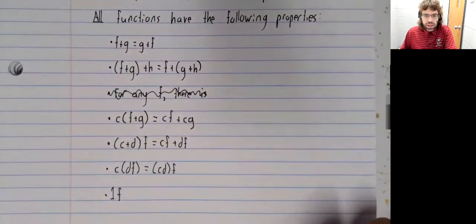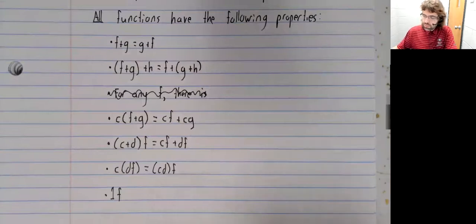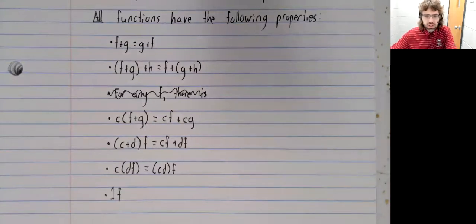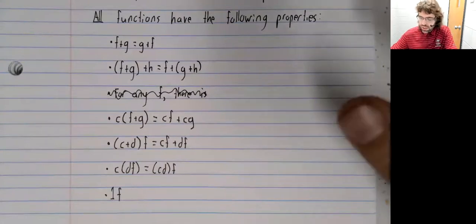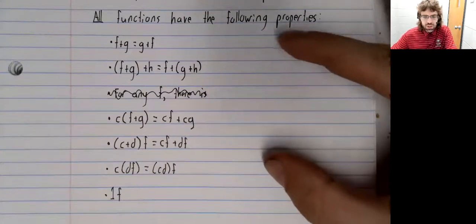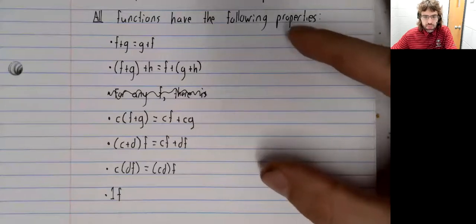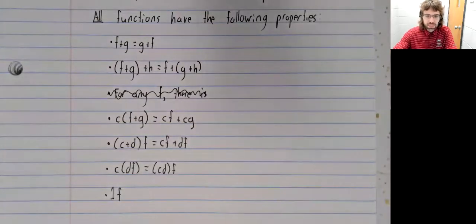So, summarizing this, if a set lives inside a vector space, it satisfies most of the vector space properties automatically. Here's what we don't get automatically.